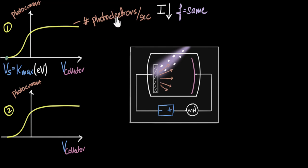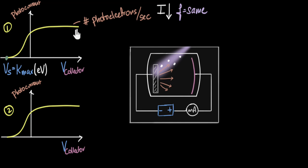Now let's look at what happens to the saturation current. When I reduce my intensity, the number of photons reduces — I'm reducing the number of photons falling on the surface per second. And if that reduces, the number of electrons coming out would reduce, and that means the current should also reduce. Therefore, my maximum saturation current has to be smaller, because fewer photoelectrons are coming out. So the new graph will look similar to the original, but with a lower saturation current.